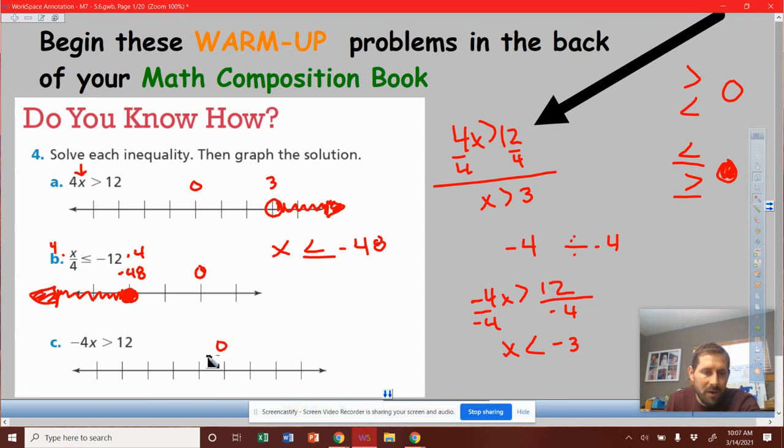So we go 0, 1, 2, negative 3. This is an open dot, and I want numbers less than negative 3.